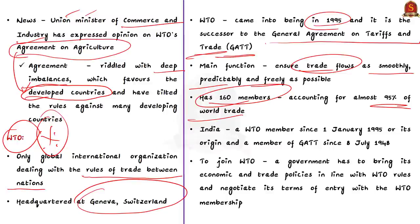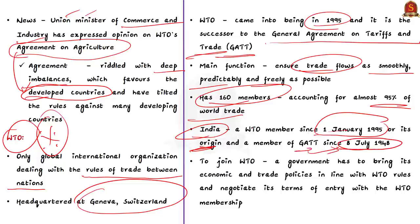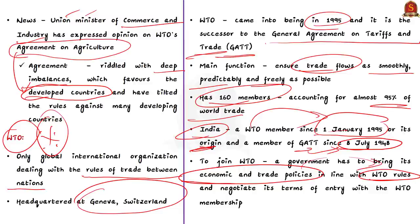India has been a member of WTO since 1st January 1995 — that is, since its origin. India was also a member of GATT since 8th July 1948. After GATT, WTO was formed and India has been a member from its origin. An important point: if a government wants to join WTO, it has to bring its economic and trade policies in line with WTO rules. Only then can a government become a member of WTO.